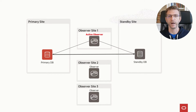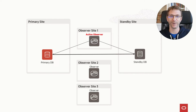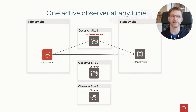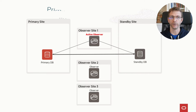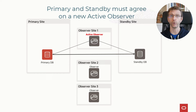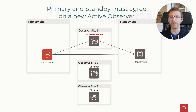If you want to have a highly available observer, you can put multiple observers on multiple sites. You could potentially put one observer per site, but it's important to understand that you will always have one active observer at a time. It's always the primary and standby database that agree on a new active observer. If the active observer is lost, the primary and standby will elect a new active observer among the surviving observers — but this always requires agreement between both databases because you need the quorum to elect a new active observer.